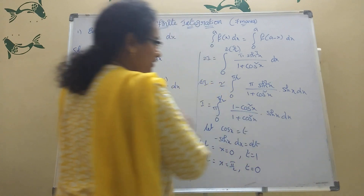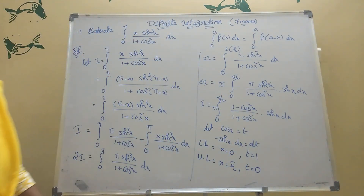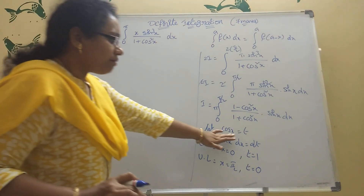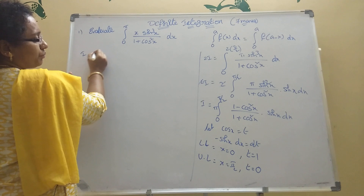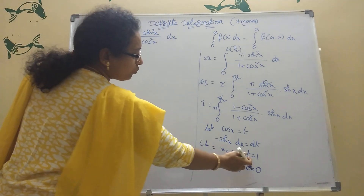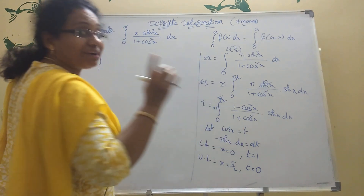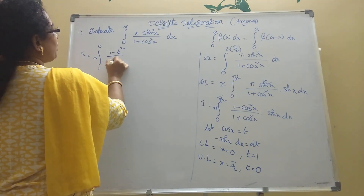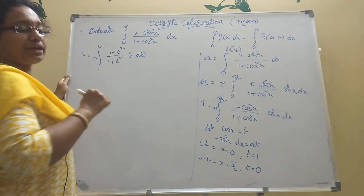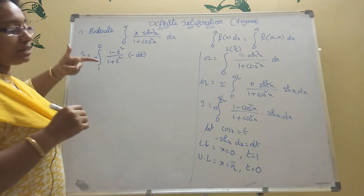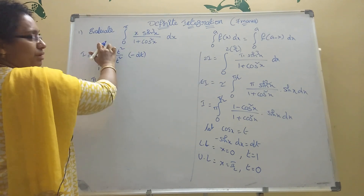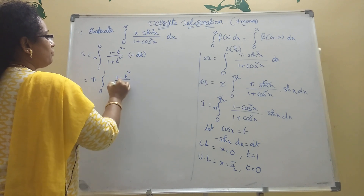Since there is a minus sign, swap the limits from 1→0 to 0→1. So I = π × integration of 0 to 1 of (1 − t²)/(1 + t²) dt. Now we need to evaluate this integral by dividing the numerator by the denominator.